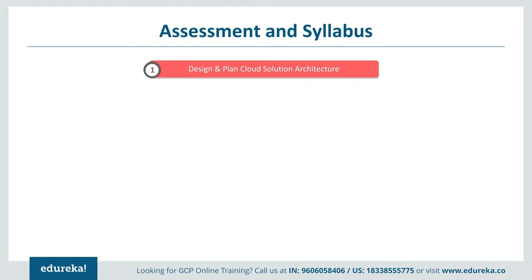Now, the assessment and syllabus for the Cloud Architect exam. The first section is designing and planning a cloud solution architecture. One should be good at designing a solution infrastructure that meets business as well as technical requirements. It includes topics such as business use cases, product strategies, cost optimization, supporting the application design, integration, and trade-offs. Designing network, storage, and computing resources is also covered.